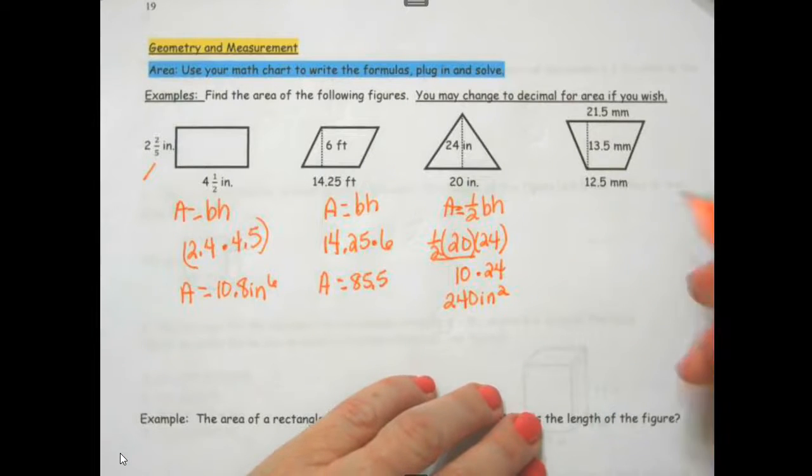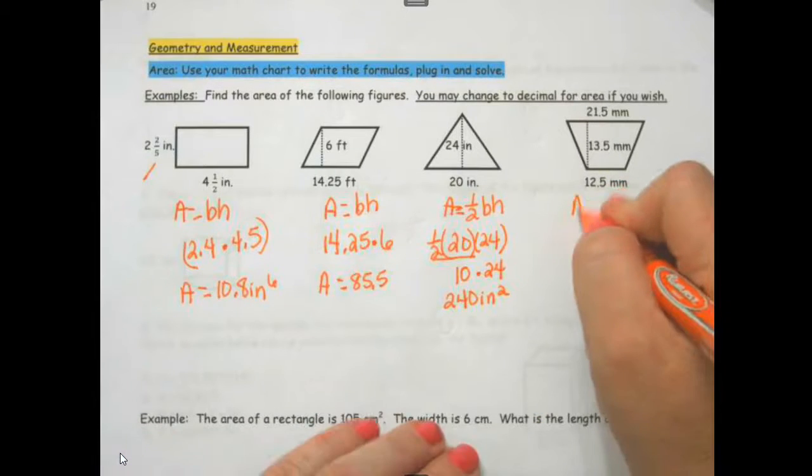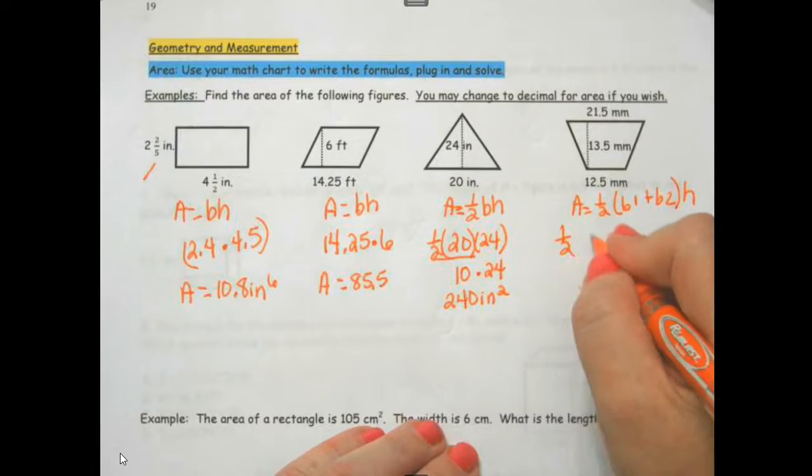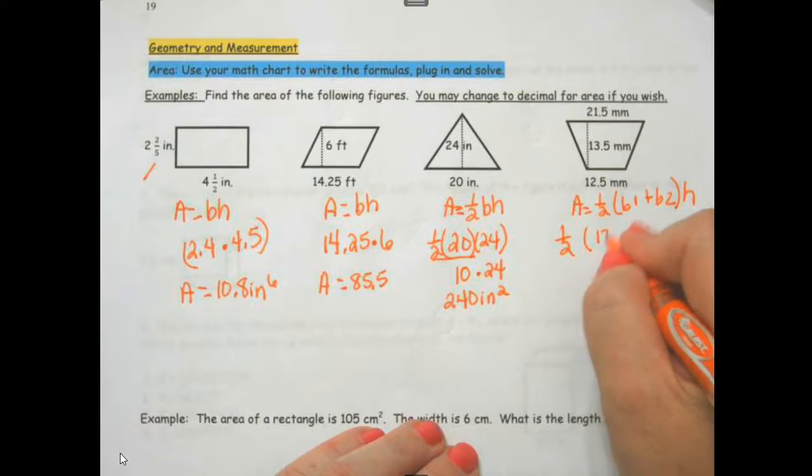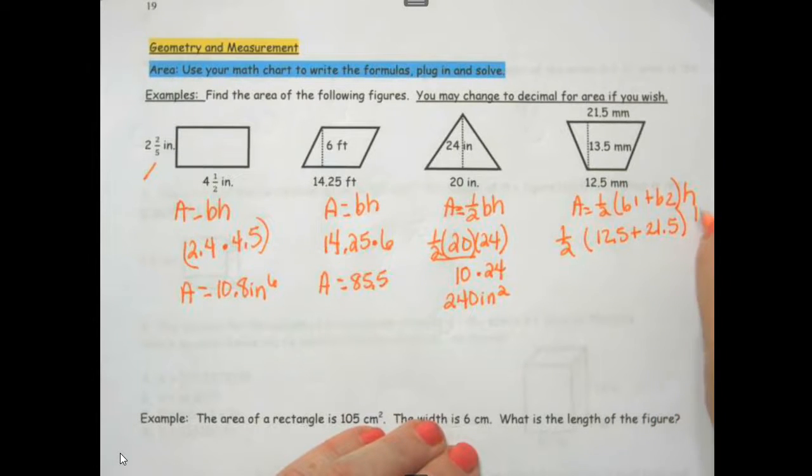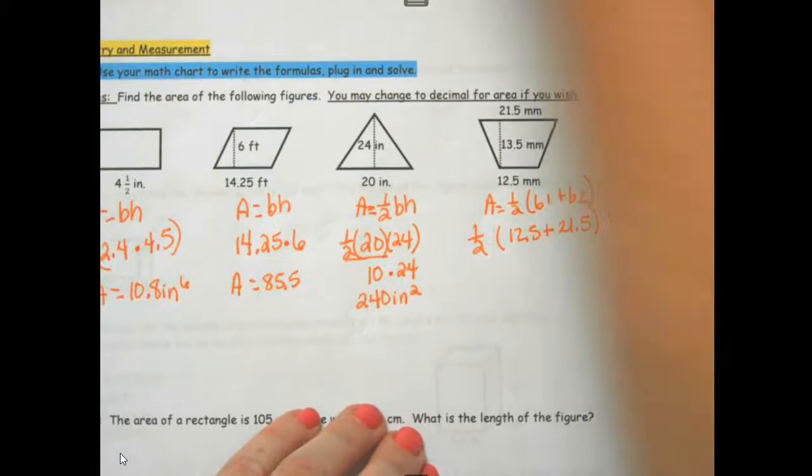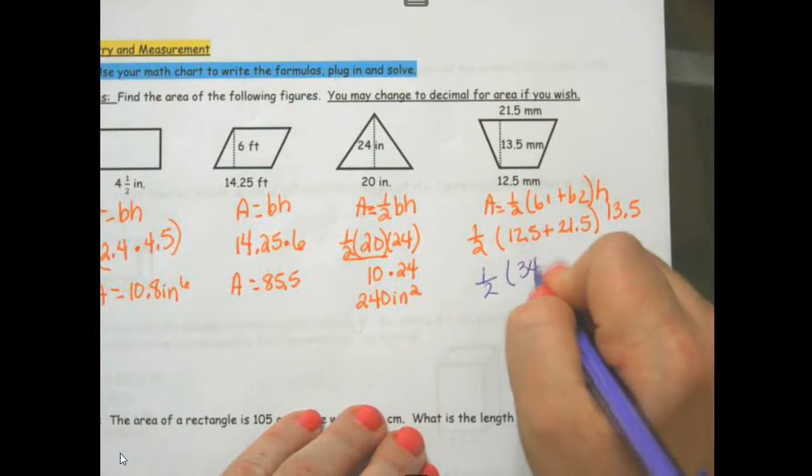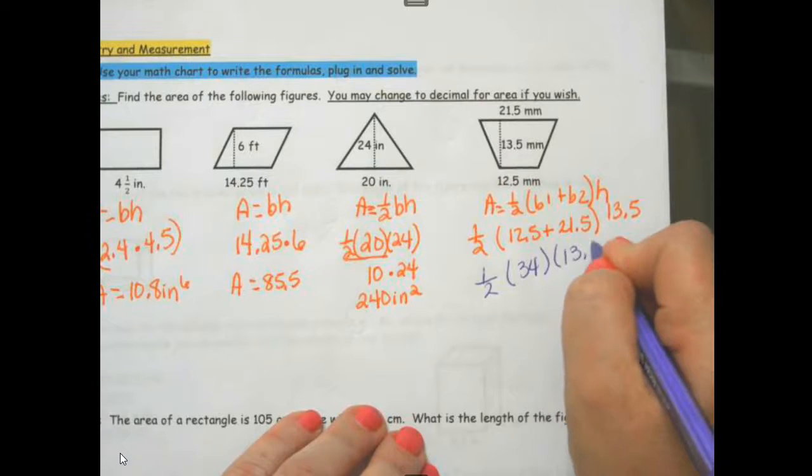This is a trapezoid. Area equals half the base 1 plus base 2 times the height. I'm just going to plug in half, 12.5 plus 21.5 times 13.5. Half of 34 times 13.5.